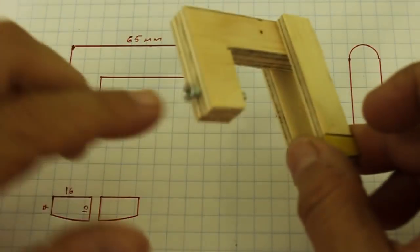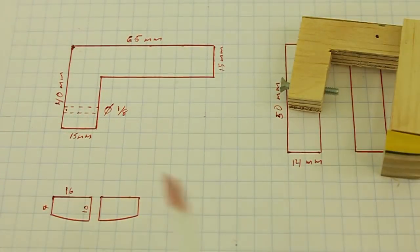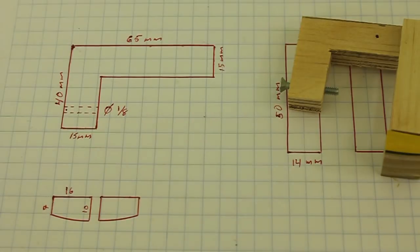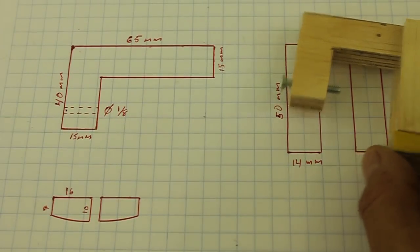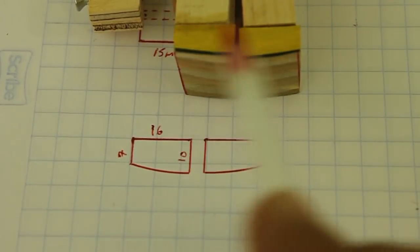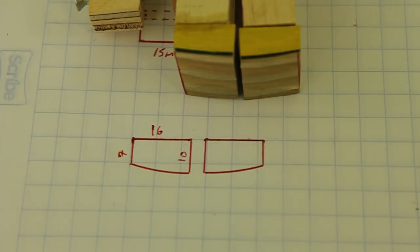And also here we need to make a hole of 1 eighth of an inch for the screw. The two feet are of these measures. 16 mm, 7 here and 10 here. And they must be sanded in this way in order to have the oscillatory move.